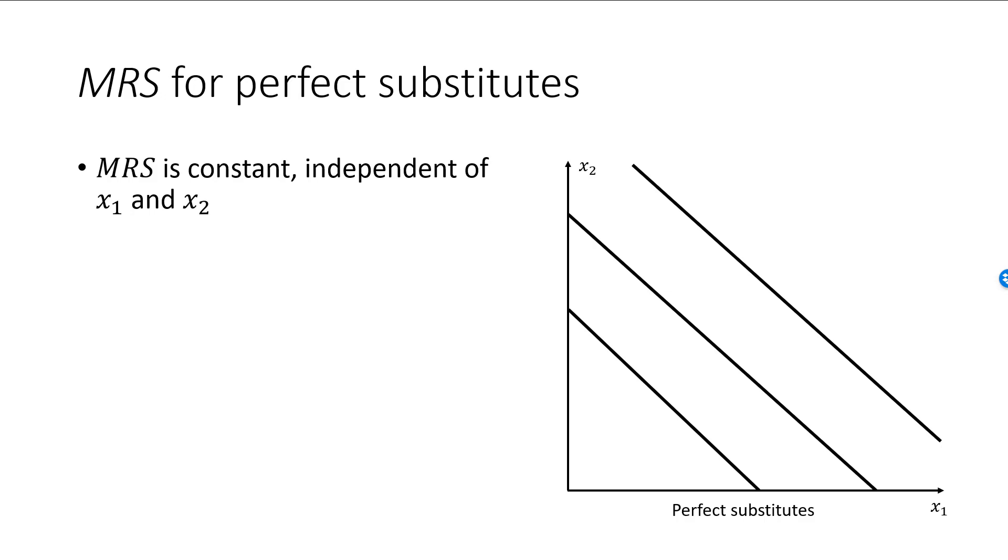We can see that MRS is constant everywhere, independent of the amount that we consume of each good. If the goods are perfect substitutes in a 1 to 1 ratio—that is, 1 unit of good 1 is viewed as a perfect replacement for 1 unit of good 2—then MRS is always equal to minus 1.